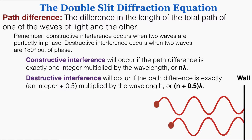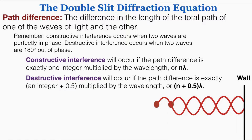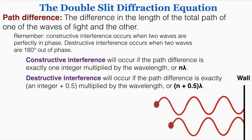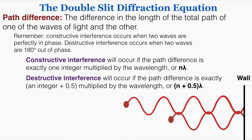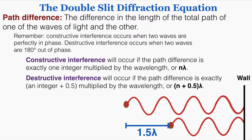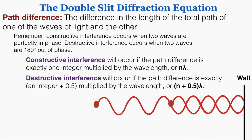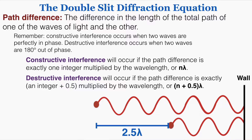I can line these waves up to create perfectly destructive interference, where the crest of one wave perfectly lines up with the trough of the other. This occurs if the path difference is exactly an integer plus 0.5 multiplied by the wavelength. Here the path difference is exactly half of one full wavelength, producing destructive interference. The next point of perfectly destructive interference occurs at 1.5 times the wavelength, and the one after that at 2.5 times the wavelength.